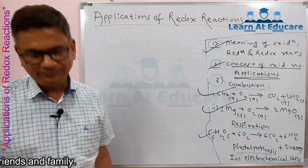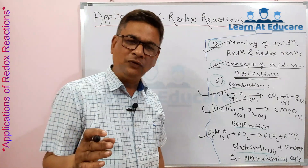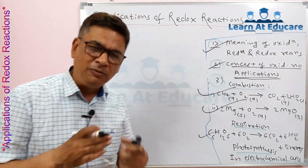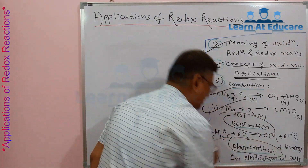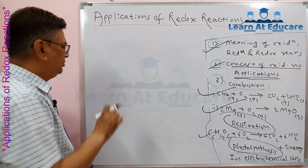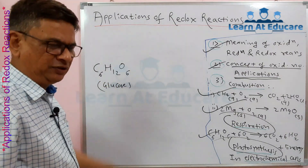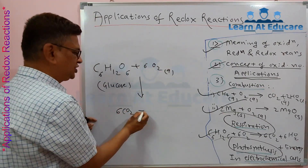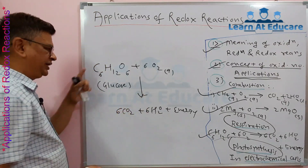Now we deal with the respiration reaction. Green plants produce glucose with the help of sunlight and chlorophyll from CO2 and H2O through photosynthesis, and that food gets decomposed when we take oxygen during respiration. The respiration reaction is: C6H12O6 + O2 → 6CO2 + 6H2O + energy, released as an exothermic reaction.